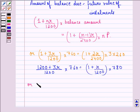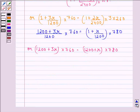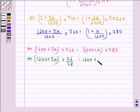Or (1200 + 3R) × 760 = (1200 + R) × 780. Or (1200 + 3R) × 76/78 = 1200 + R.